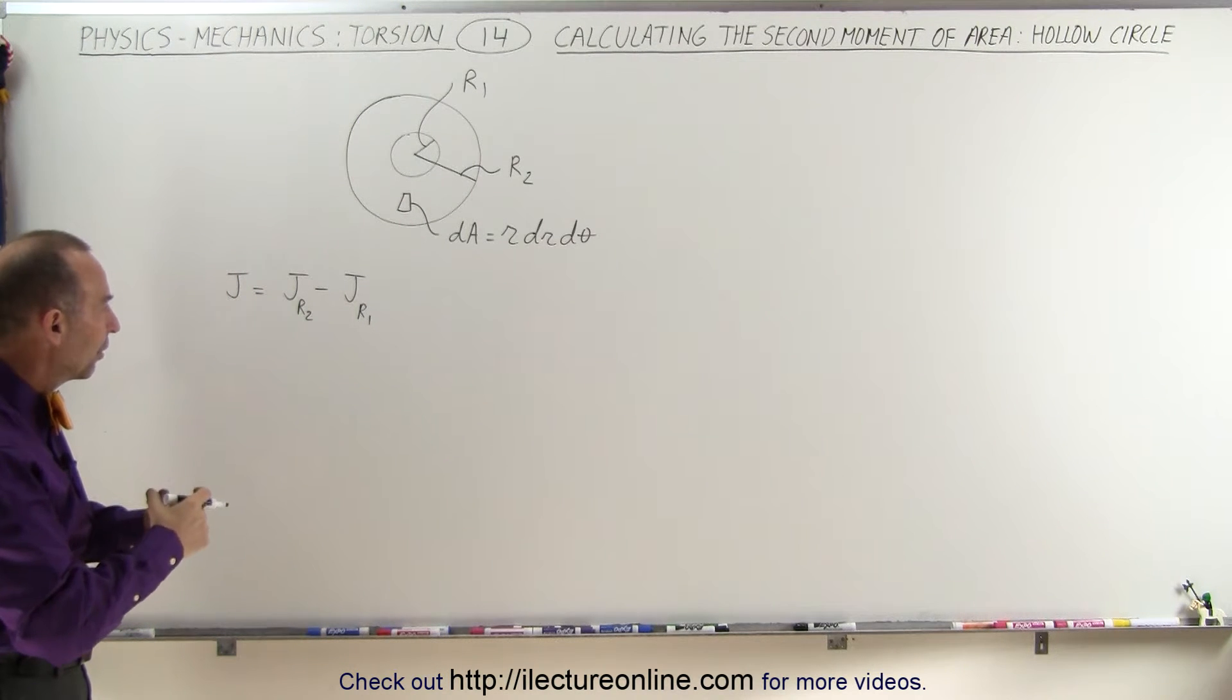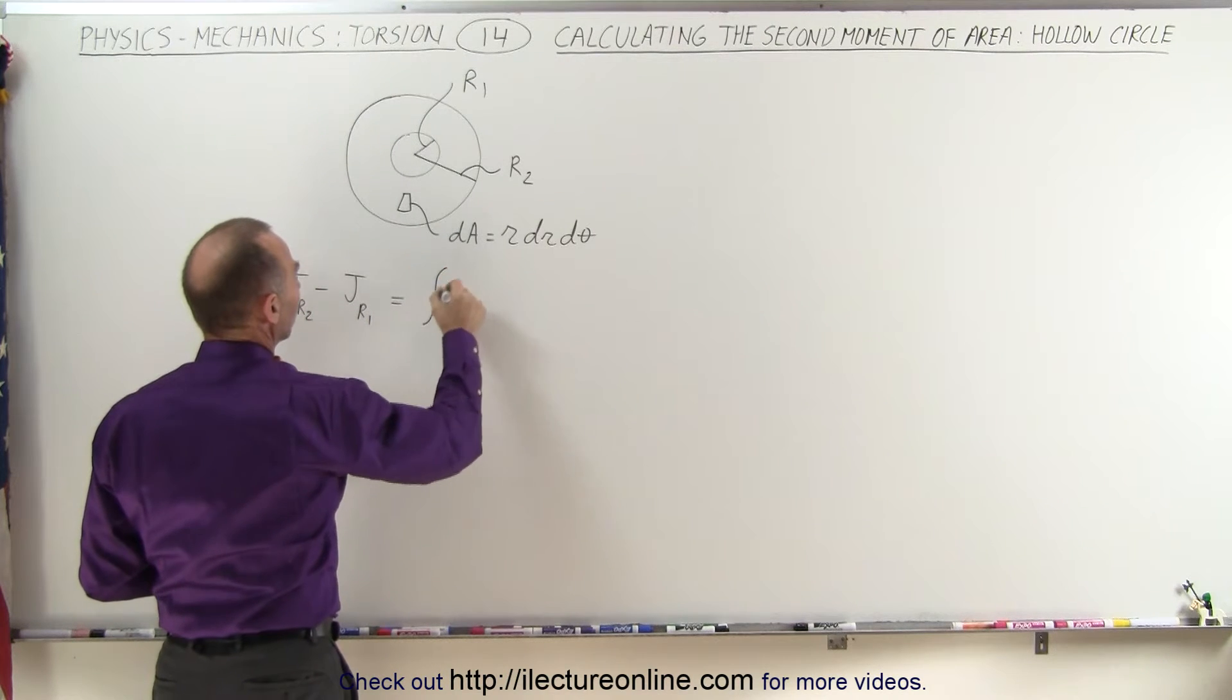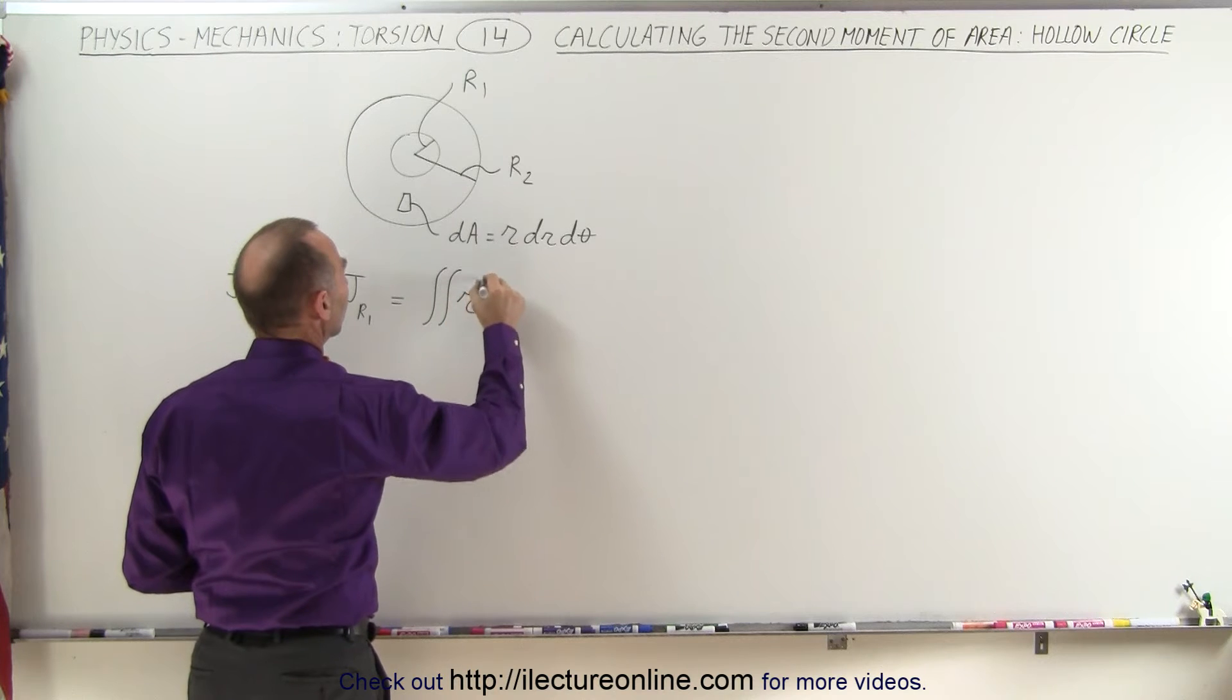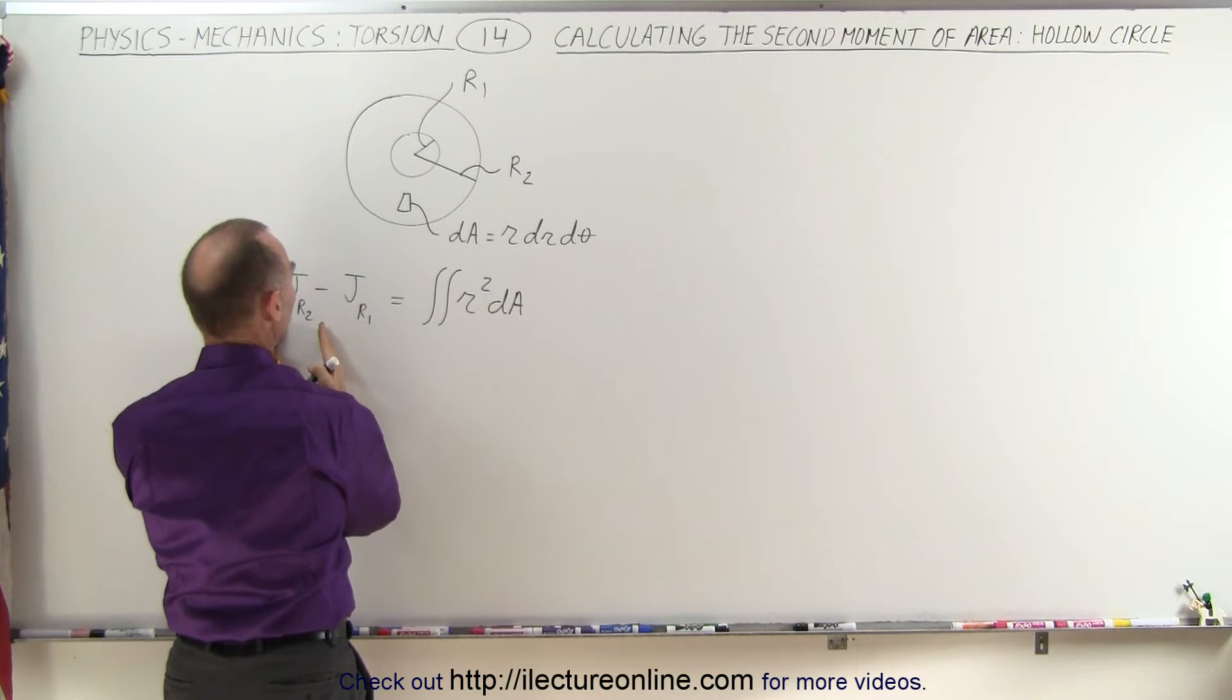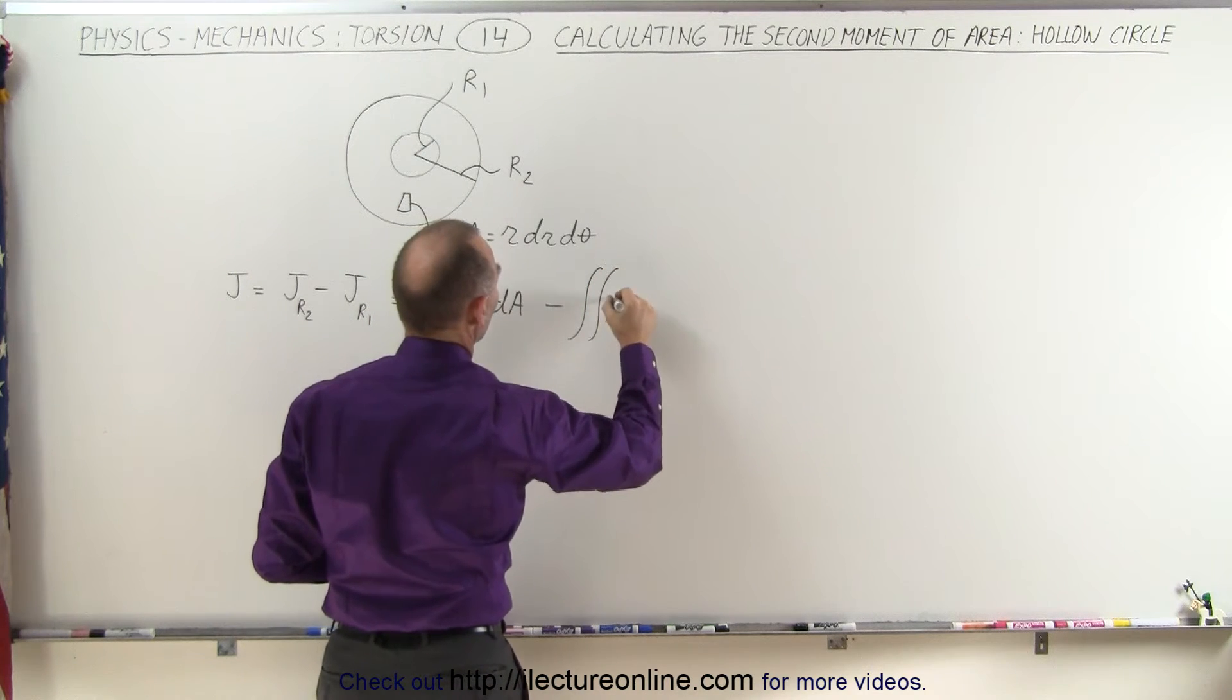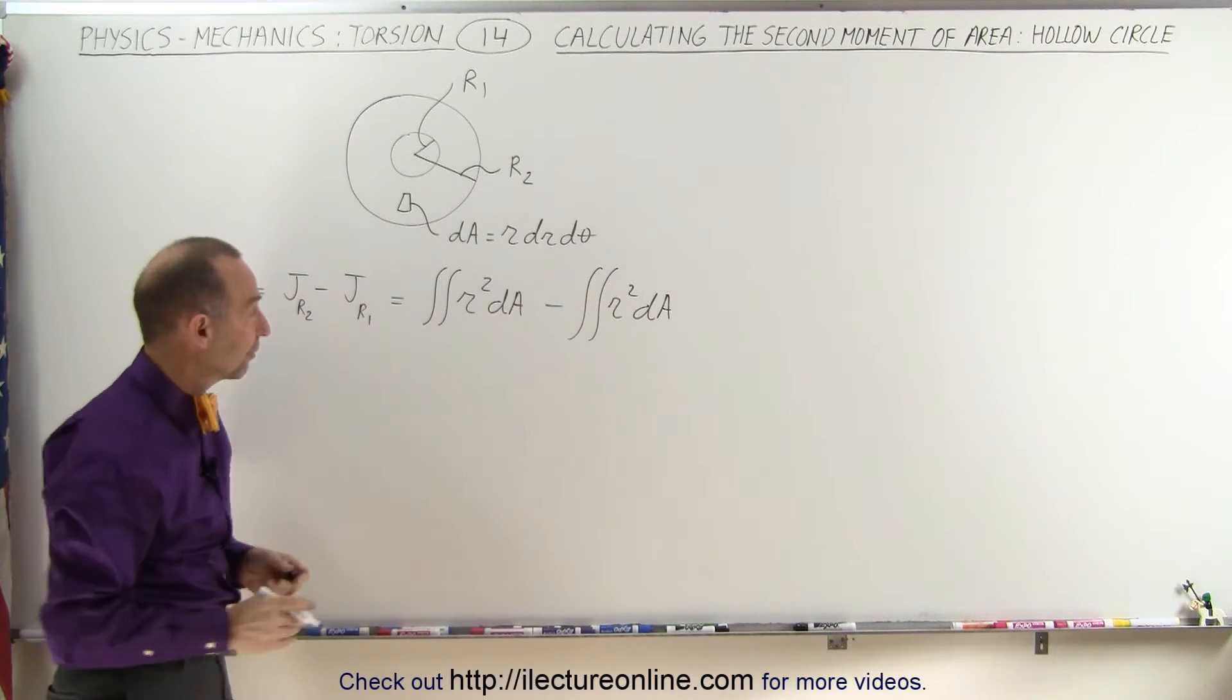So that means we're going to have a set of double integrals. That would be equal to the double integral of the distance, we'll call it R squared times dA, and that would be for the R2 portion, for the whole circle subtract from that the double integral of R squared dA. The only difference is that we have different limits of integration.